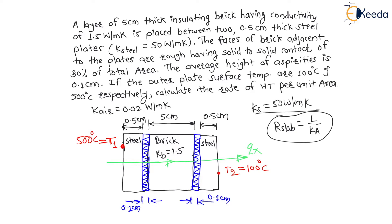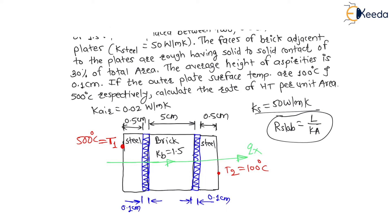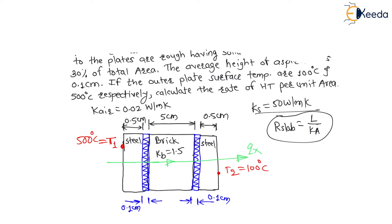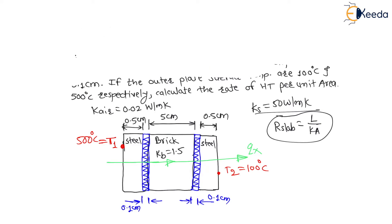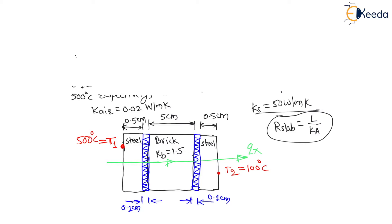Let us understand these various resistances. The thermal conductivity of air is also given. The resistance for the slab is L/(KA). Let us now draw the circuit with temperatures at various locations: T1, T3, T4, T5, T6, and T2.